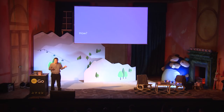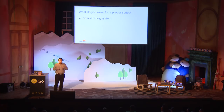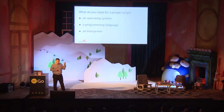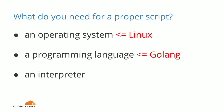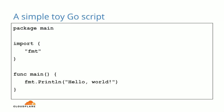Okay, how do we do that? What do we need as an environment for a proper script? We need an operating system, we need a programming language and an interpreter. For the operating system, for the purposes of this talk and the greater good, we will use Linux because it's the only real operating system. The programming language is obviously Go. And what about the interpreter? How do you run your Go code in source form? People will say, oh, there is this official tool Go run, and maybe we can use that. Let's take a simple Go script as an example.